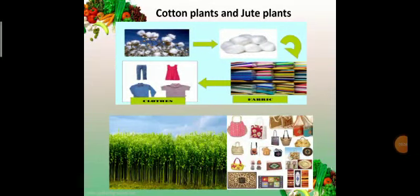Cotton plants and jute plants. We also get cotton and jute from plants. Cotton plants give us cotton. From this cotton, we made fabric. And from this fabric, we can make different types of cotton clothes. Jute plants. From jute plants, we make purses, mats, ropes, bags etc. In short, cotton is used to make clothes. And jute is used to make ropes, mats, bags, purses, etc.